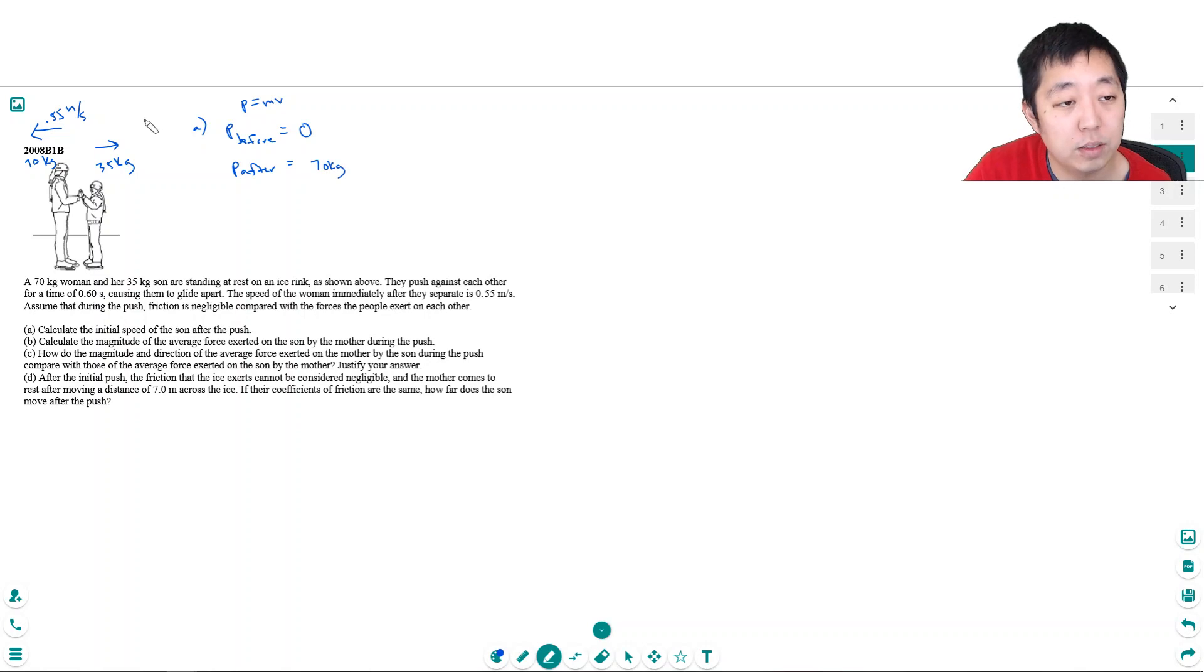I have to do the mass, 70 kilograms, and I'm going to say to the right is positive. So her velocity is really negative 0.55 meters per second, plus 35 kilograms times the velocity of the boy, VB.